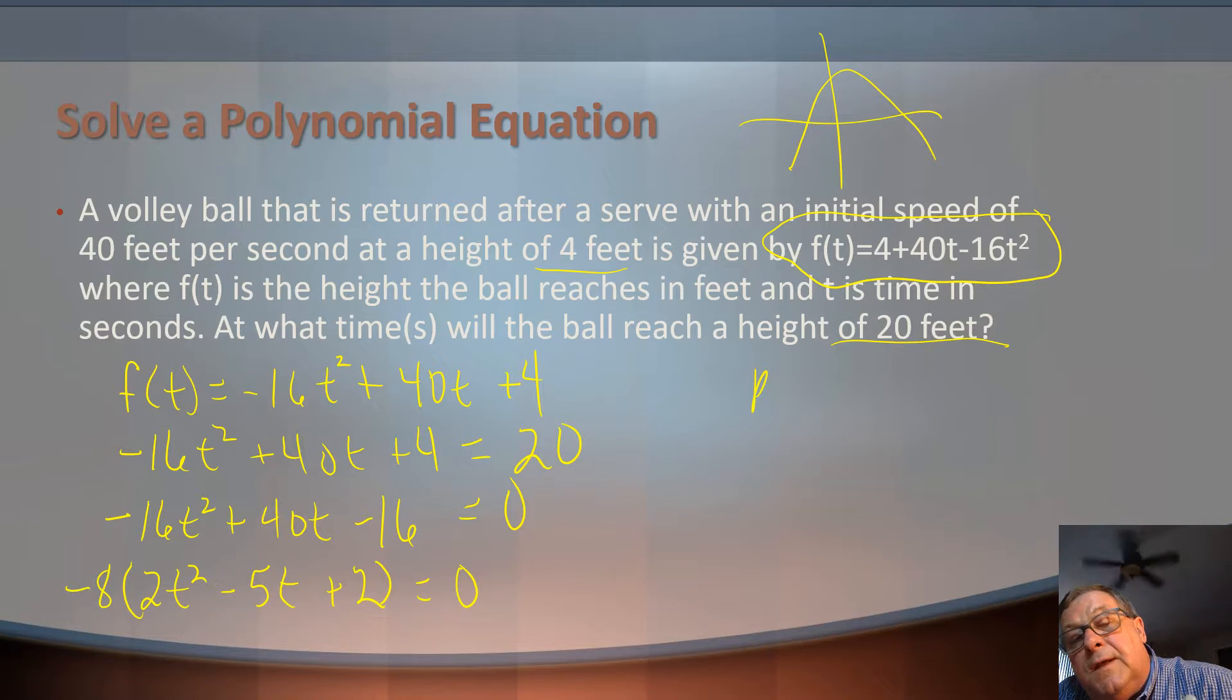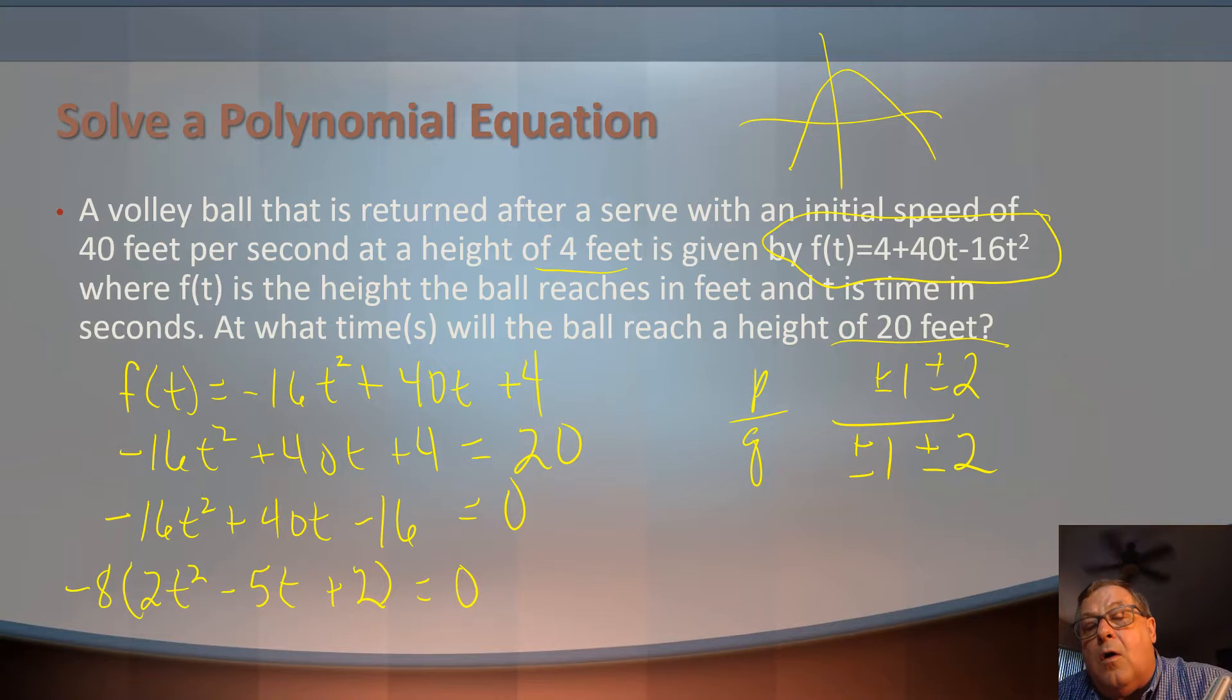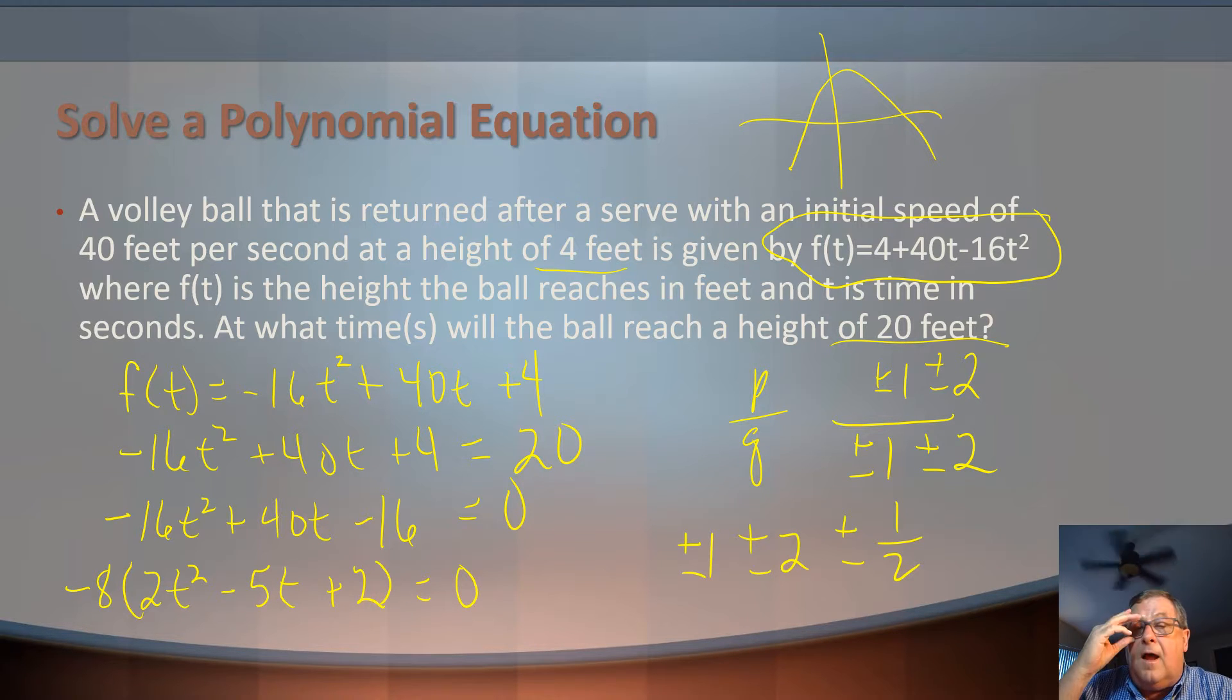we know that is a function of p over q, where p is the multiples of the constant, in this case plus or minus 1, plus or minus 2, over the multiples or factors of the lead coefficient, which is plus or minus 1, plus or minus 2. So my possible rational real zeros in this function are plus or minus 1, plus or minus 2, and plus or minus 1/2, by the time I finish looking between the numerator and denominator.